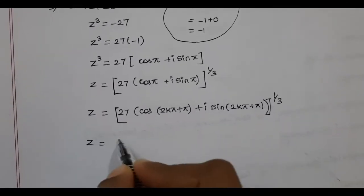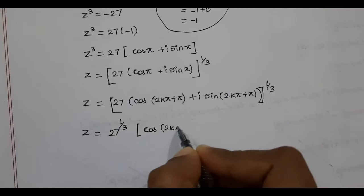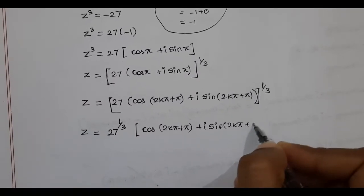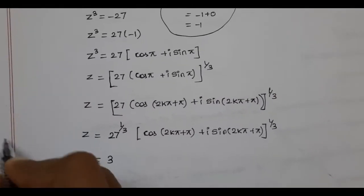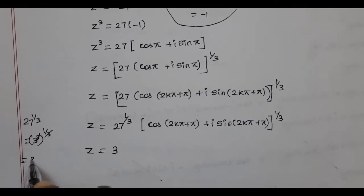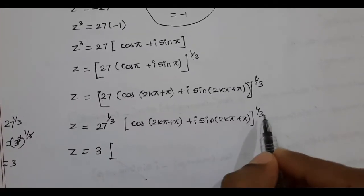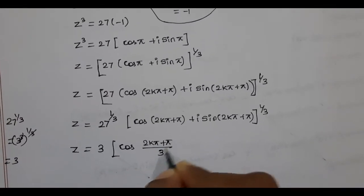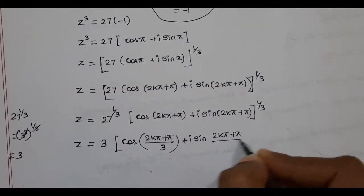Next, z = 27^(1/3) × [cos(2kπ + π) + i sin(2kπ + π)]^(1/3). The cube root of 27 is 3. So z = 3 × [cos((2kπ + π)/3) + i sin((2kπ + π)/3)].